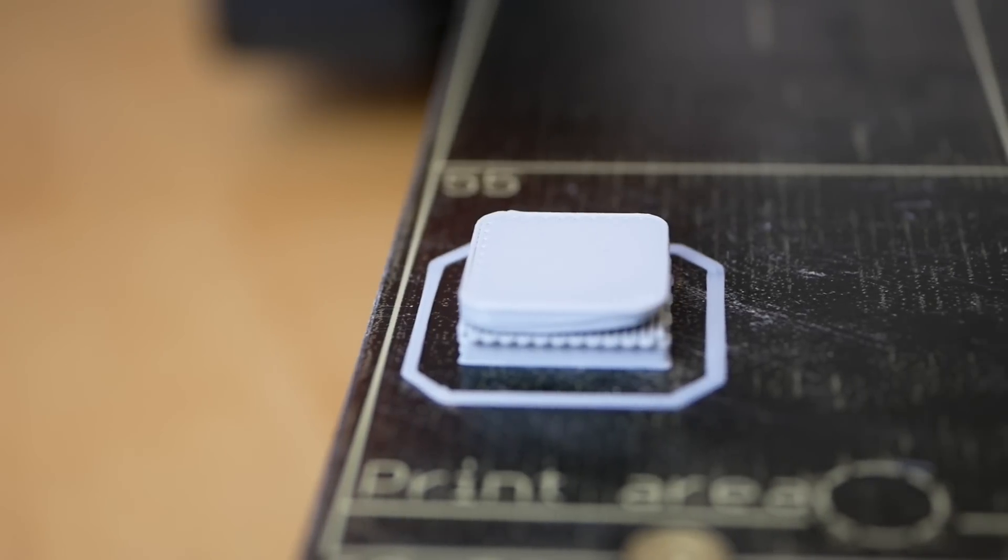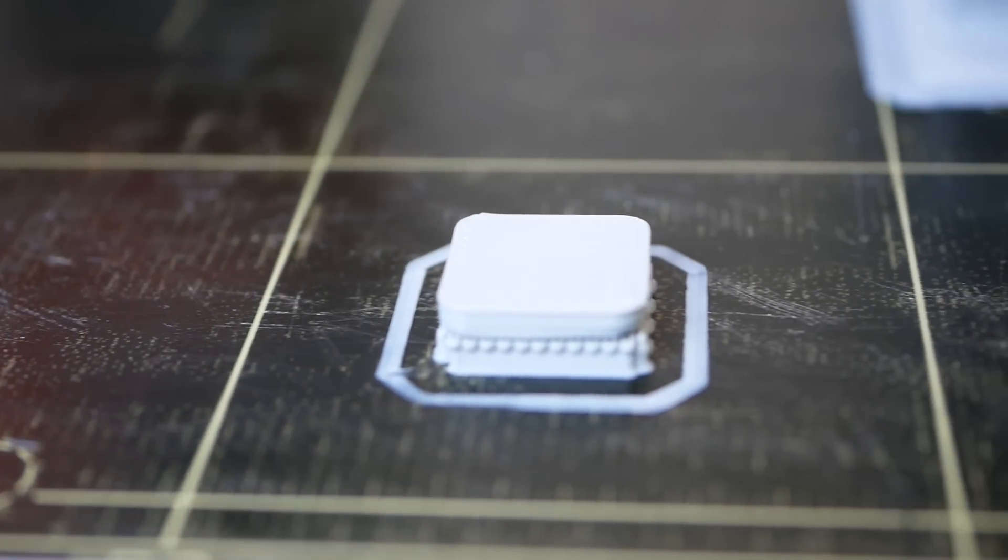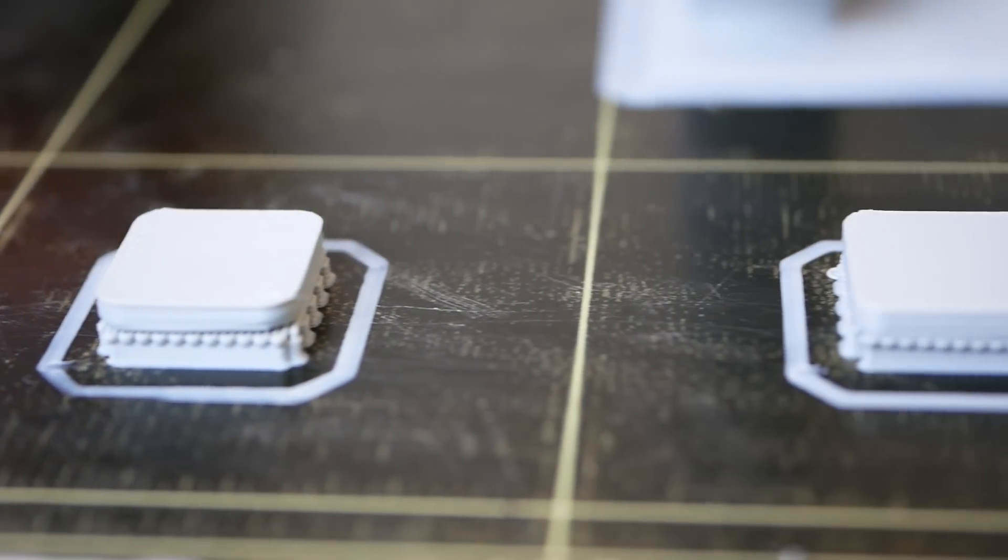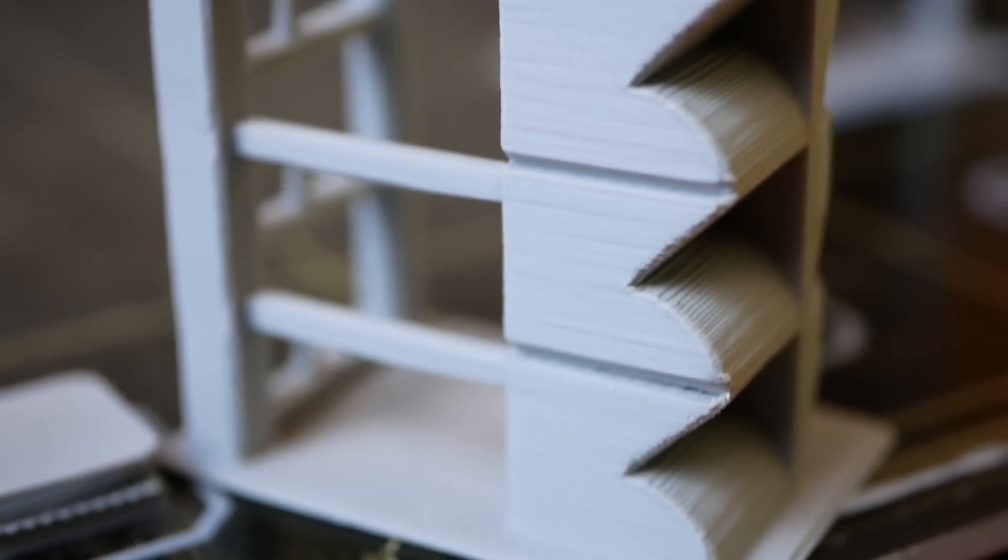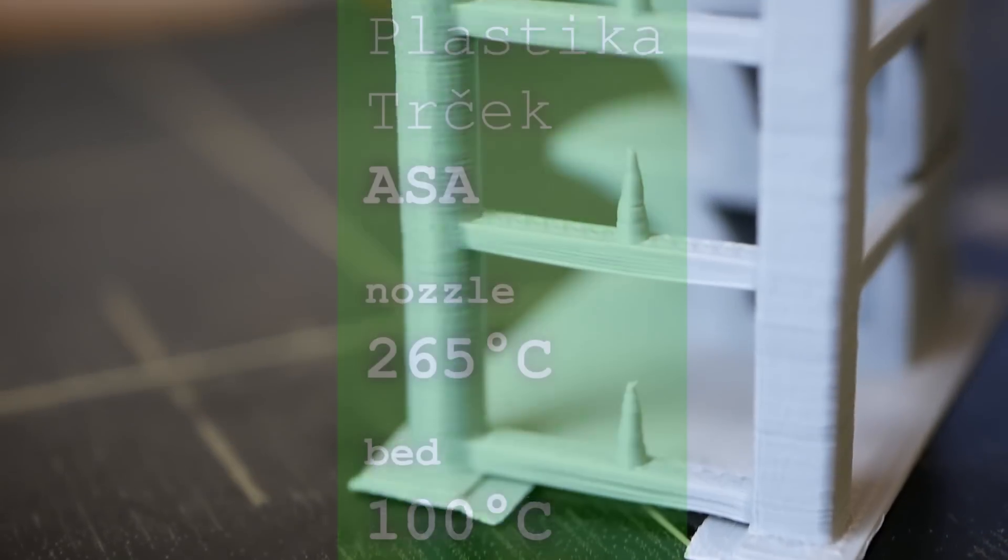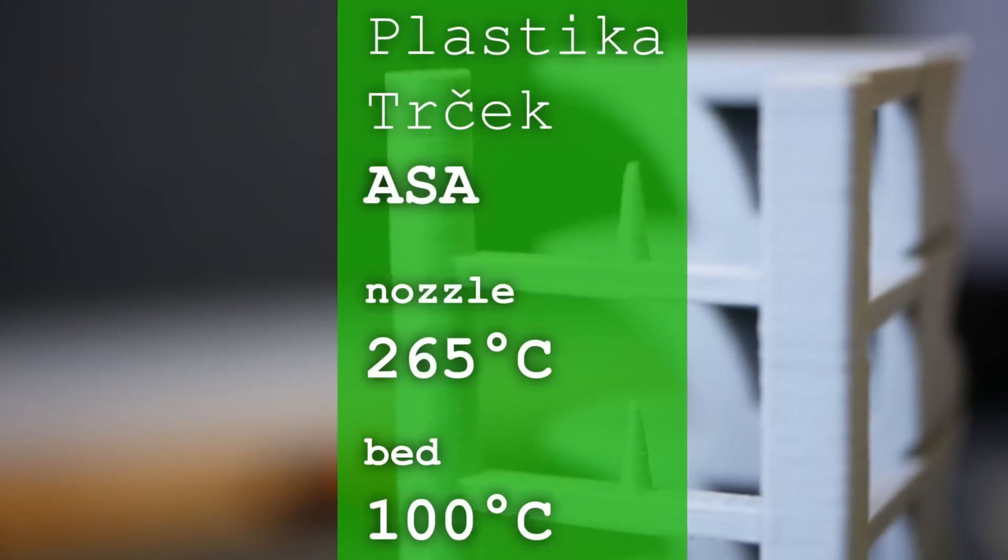The ASA has a very similar smell as ABS during printing and I had to move the printer into another room because I wasn't comfortable having the odor in my office. I tried printing temperatures from 235°C to 275°C which all worked fine quality wise but ended up printing all the test samples at 265°C.